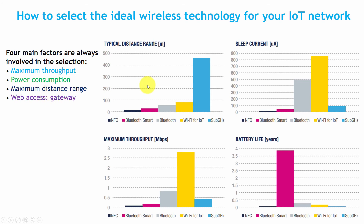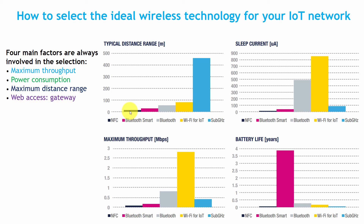If we look at the typical distance range in meters, we are discussing NFC, Bluetooth Smart, Bluetooth Classic, Wi-Fi for IoT, and sub-gigahertz. Sub-gigahertz has the maximum range, Wi-Fi range is around 100 meters, then Bluetooth Classic, then Bluetooth Smart, and then NFC. NFC works up to a maximum of 10 centimeters — on average it works 4 to 5 centimeters.